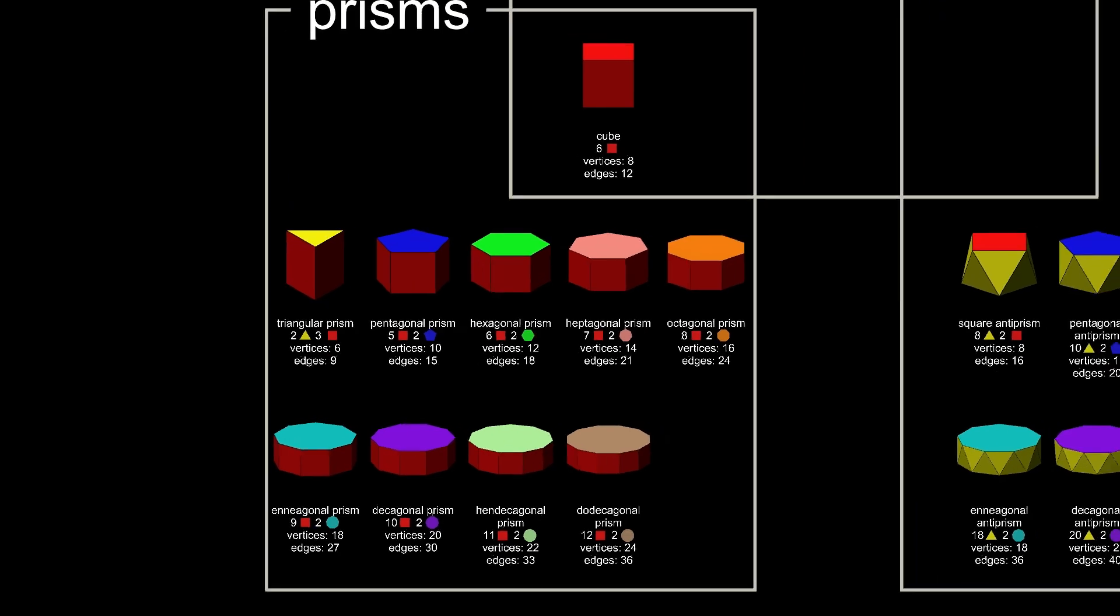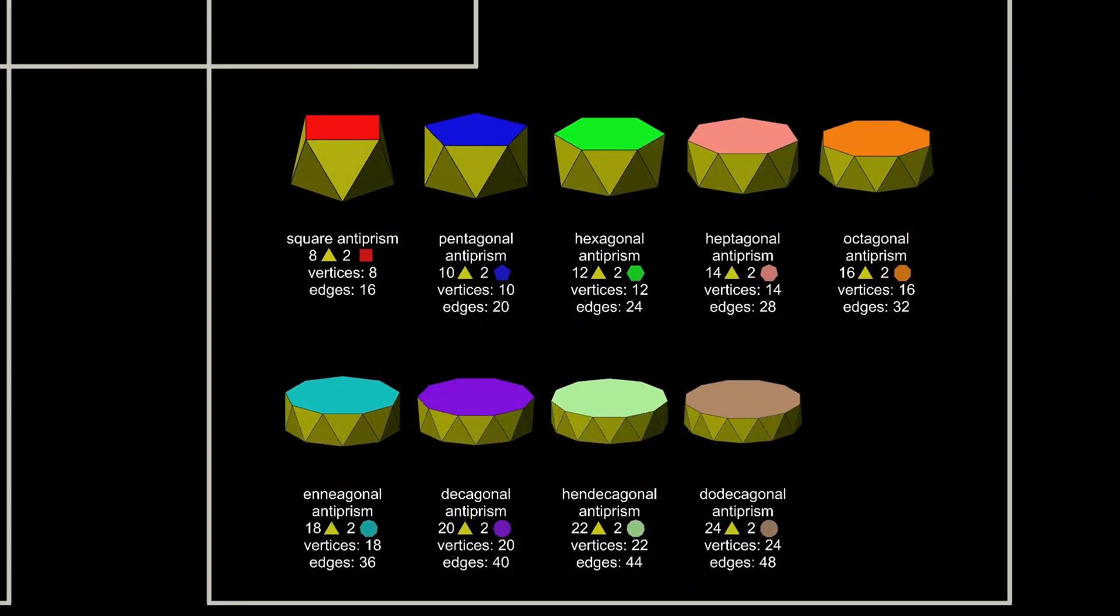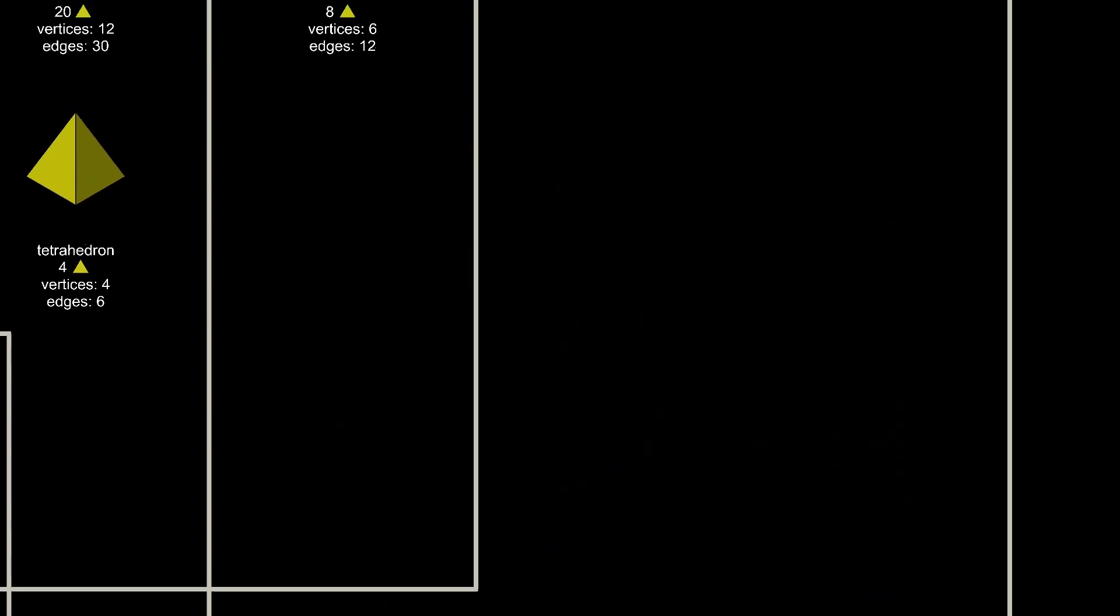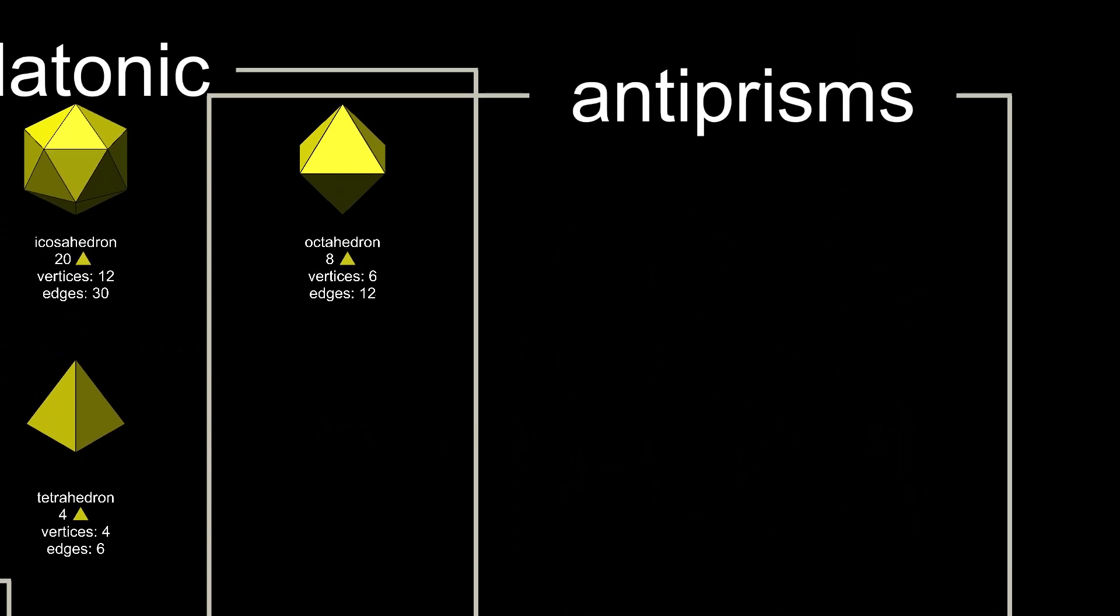Closely related to the prisms are the anti-prisms, two identical end faces separated by a ring of triangles. This is also an infinite family. The triangular anti-prism is an octahedron, so it's also a platonic solid.